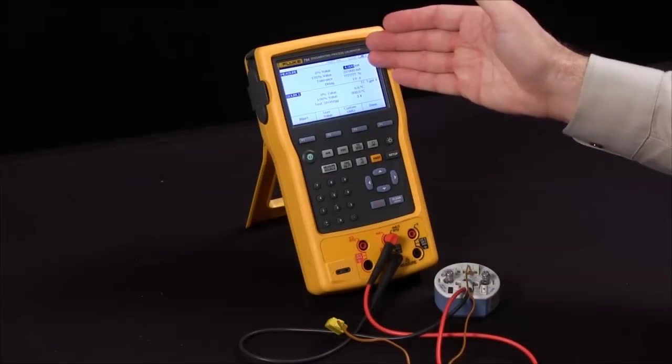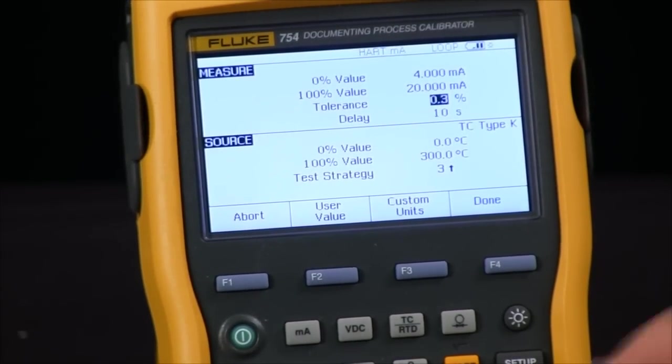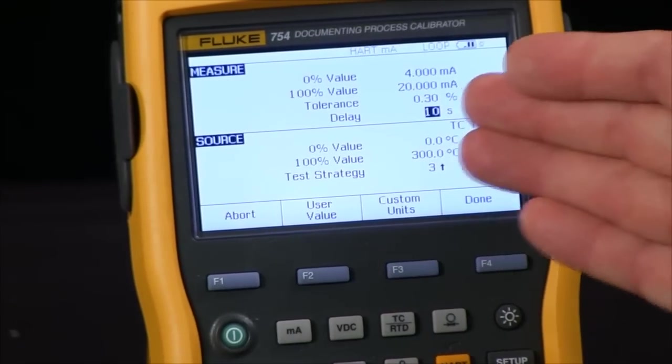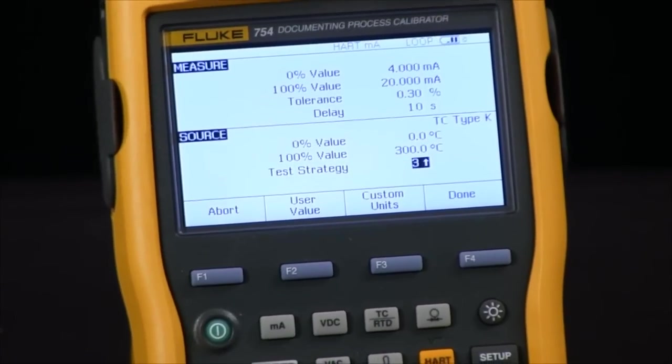Right now my upper and lower range, I'm going from 4 to 20 milliamp. I will set my tolerance, we'll just select 0.3. My delay I can set to anything, I will leave it at 10 seconds. And there's my 0% and my span values and then what kind of test do I want to do.